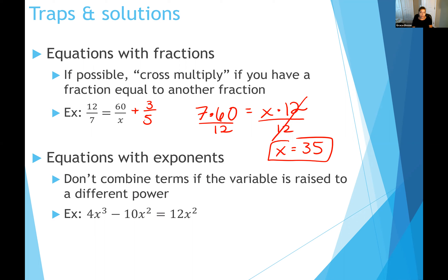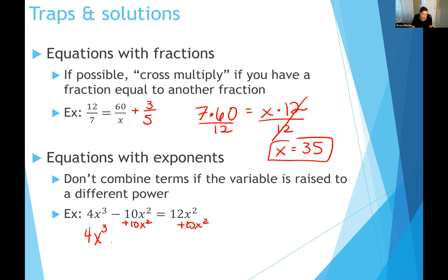When your equation has exponents, every term with a different exponent cannot be combined with terms of a different exponent. In this example, I have three terms: the first has x raised to the power of three, and the other two have x raised to the power of two. I can combine the x-squared terms, but I cannot combine them with the x-cubed term. So the best I can do here is write four x cubed equals 22 x squared.